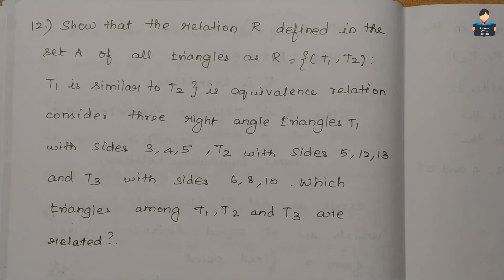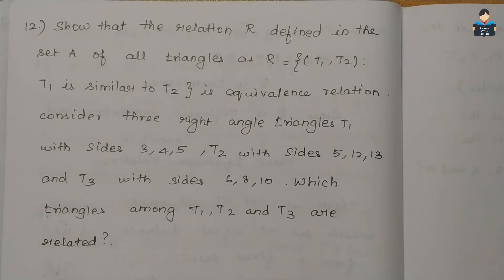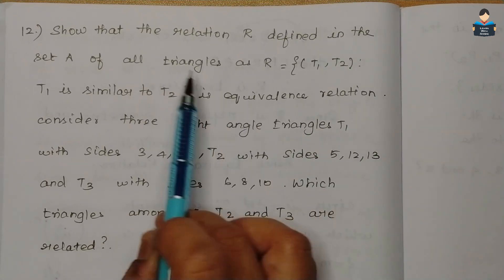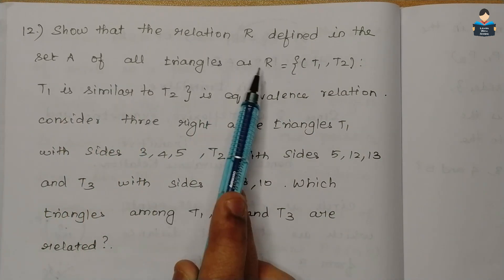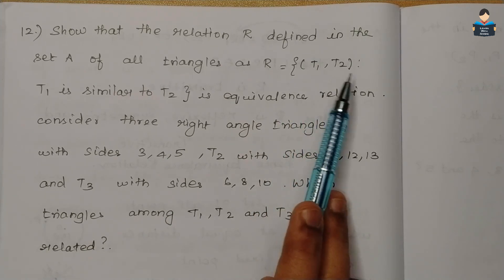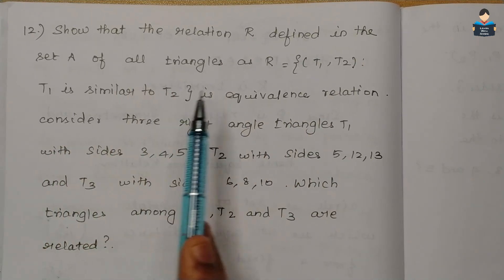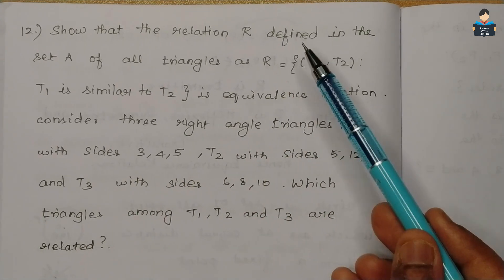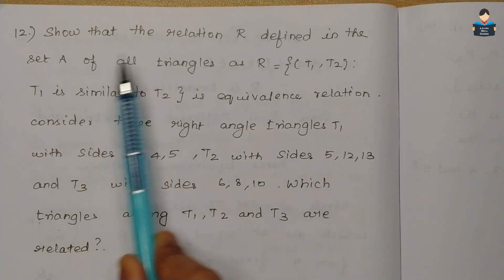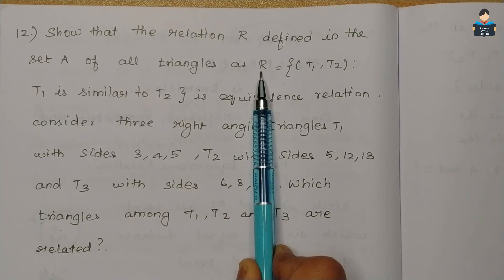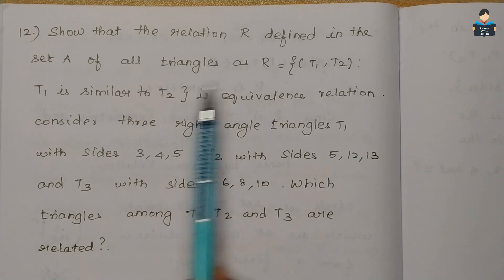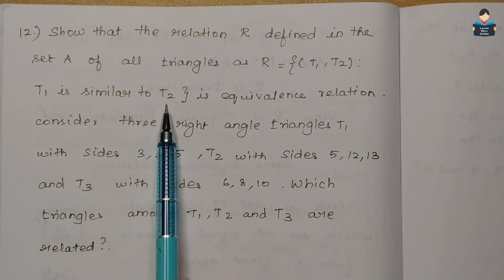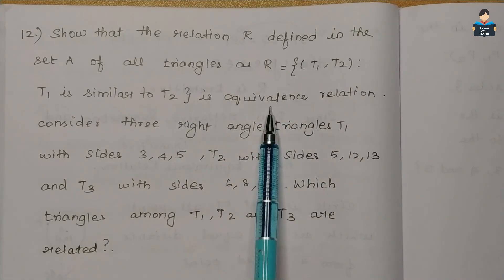Hello everyone, welcome to the channel. In this video, Class 12 standard NCERT Math, Chapter 1 Relations and Functions, Exercise 1.1, Question 12: Show that the relation R defined in the set of all triangles as R = {(T1, T2) : T1 is similar to T2} is an equivalence relation.